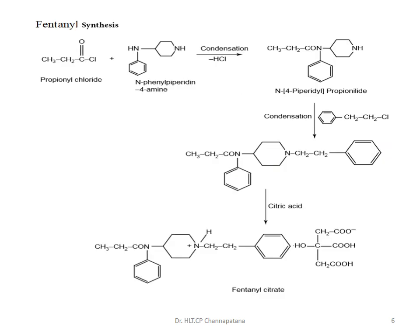Now we will see the synthesis of fentanyl, which is a 3-step process. In the first step, propionyl chloride is reacted with N-phenyl-piperidine-4-amine in a condensation reaction, releasing hydrochloric acid to give N-(4-piperidyl)propionamide. This intermediate is then condensed with phenylethyl chloride to give fentanyl. When treated with citric acid, fentanyl citrate is obtained.